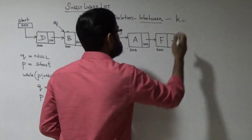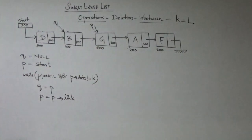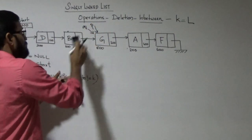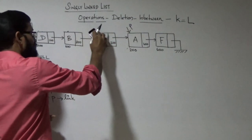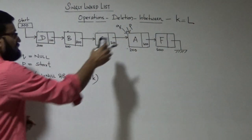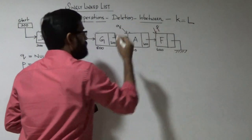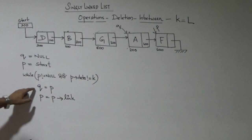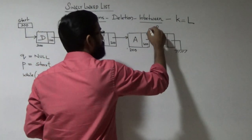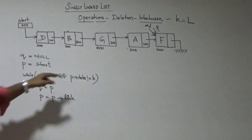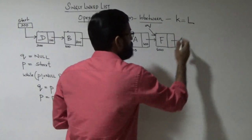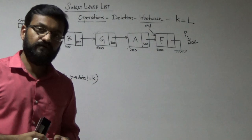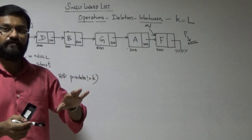If the search key is some value like l that is not in the list, the loop keeps iterating: q = p, then p = p.link, checking the condition each time. Eventually p will become null, meaning the node to be deleted is not there in the linked list.